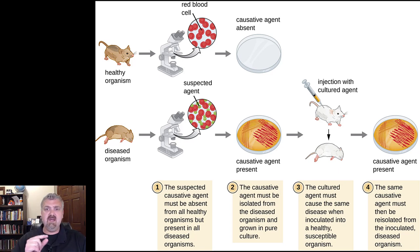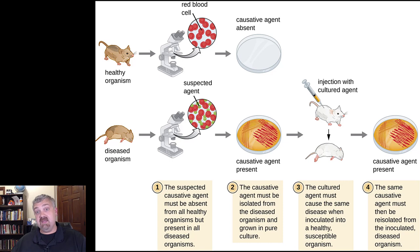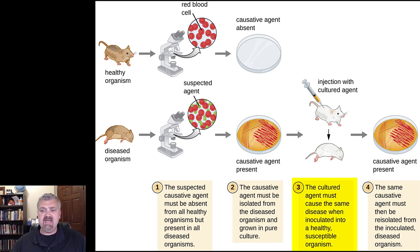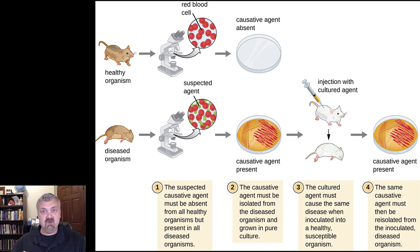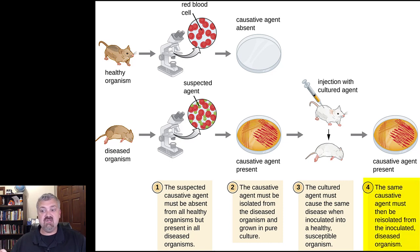He took this very seriously. He would have done maybe six or eight different rounds of isolating pure cultures before he put them in the next animal. Step three: the cultured agent must cause the same disease when inoculated into a healthy susceptible organism. He took that organism isolated in pure culture and gave it to another animal, and it got the same disease. And the last step: the same causative agent must then be re-isolated from this second animal and obviously be the same organism.